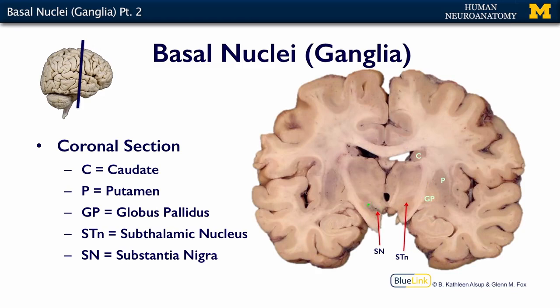We can see the substantia nigra. This brain isn't stained for anything — this is simply a fresh slice of a human brain, and this is what the substantia nigra looks like naturally. It was named for the brown spot because that's exactly what it looks like. And there's an almond-shaped nucleus here — this is the subthalamic nucleus.